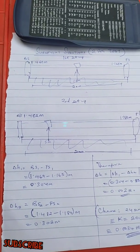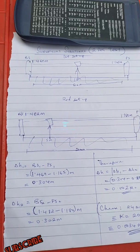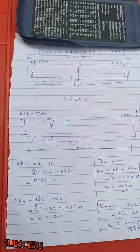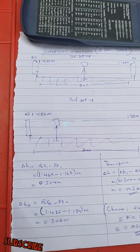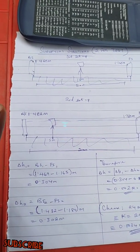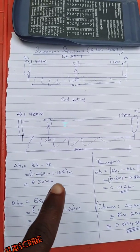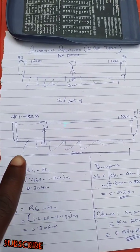So the formula or the computation or the deduction for the two peg test: the first change in h will be your backsight minus your foresight. So the first backsight is 1.469 minus the foresight, which is 1.165, so we are having 0.304. Please get the calculator and confirm these values for yourself.